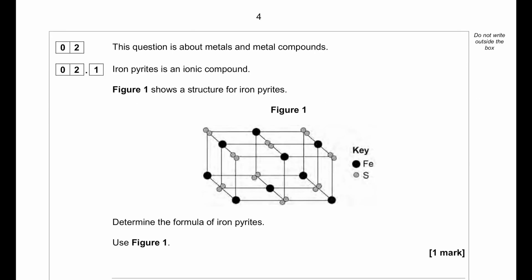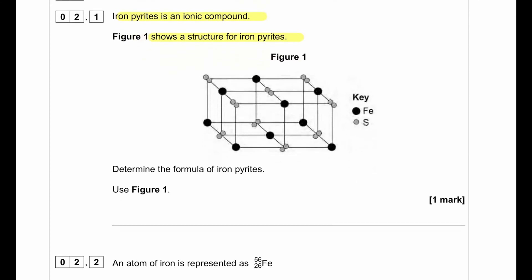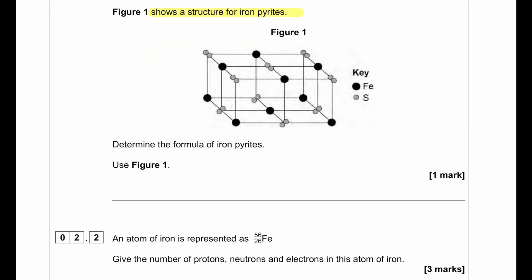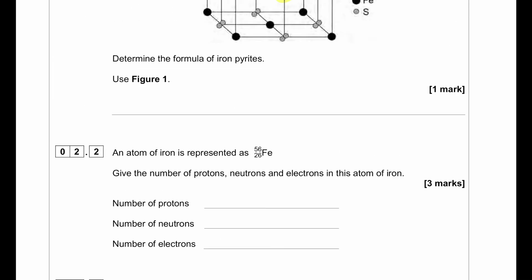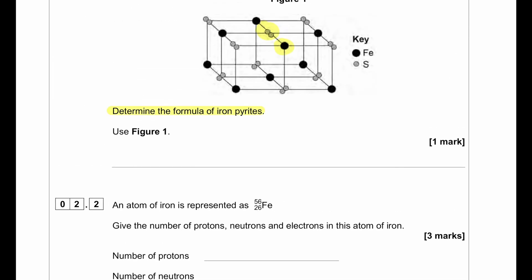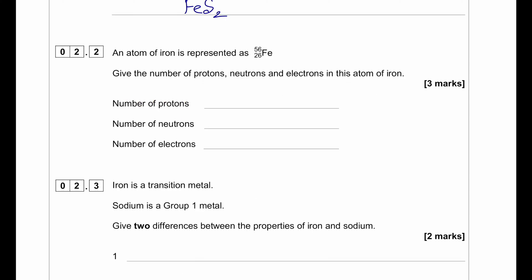This question is about metals and metal compounds. Iron pyrites is an ionic compound. Figure 1 shows the structure of iron pyrites — there is one atom of iron with two atoms of sulfur. Determine the formula of iron pyrites. Since there is one atom of iron and two atoms of sulfur, the formula should be FeS₂.